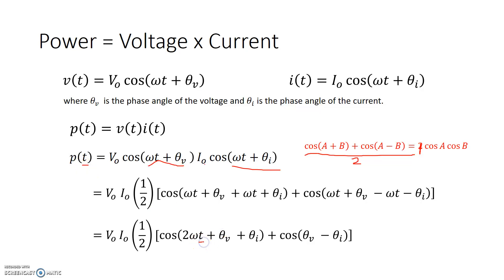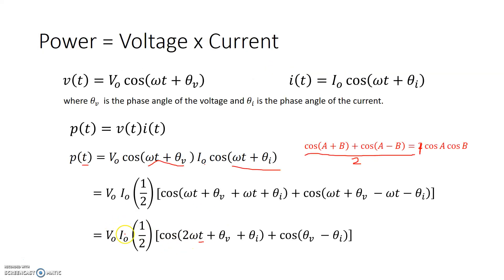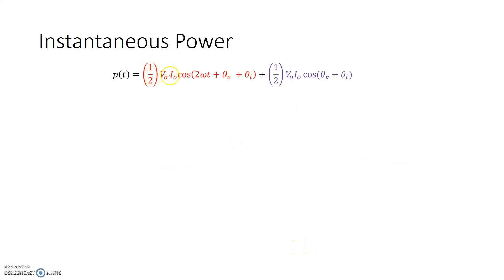You replace t and you know exactly what the power is. Looking at that expression carefully, it has two components: one half v0·i0 times cosine of the first term, and one half v0·i0 times cosine of the second term. If you look at the first term, we have a cosine with twice the frequency. In MATLAB, I'm going to run a script and show you what the instantaneous power looks like for a resistive, capacitive, and inductive circuit.